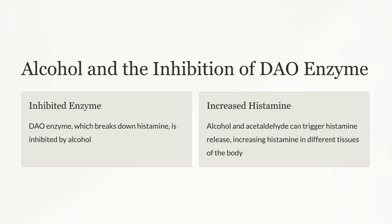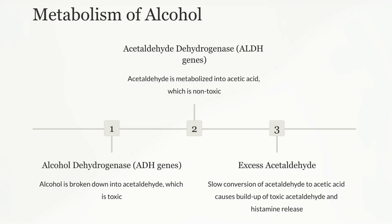Alcohol and acetaldehyde can trigger histamine release, which increases histamine in different tissues of the body. First, alcohol is broken down into acetaldehyde, which is toxic. Then, acetaldehyde is metabolized into acetic acid, which is non-toxic. Slow conversion of acetaldehyde to acetic acid causes a buildup of toxic acetaldehyde and releases histamine.